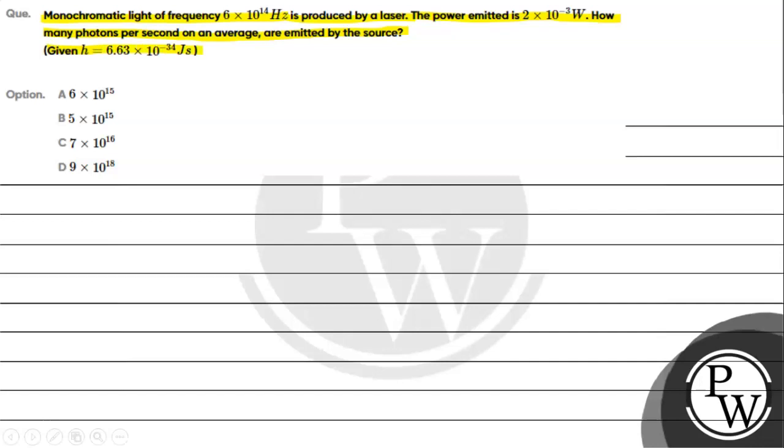We can take the value of h, that is Planck's constant, as 6.63×10^-34 joule seconds. Option A: 6×10^15, Option B: 5×10^15, Option C: 7×10^16, Option D: 9×10^18.